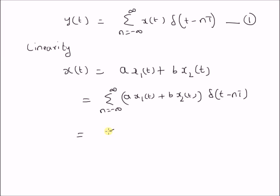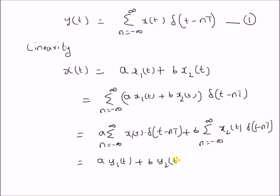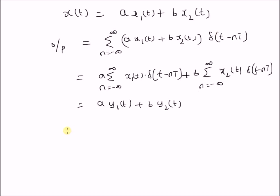this can be rewritten as the sum from n equals minus infinity to plus infinity of a·x1(t)·delta(t) plus b·x2(t)·delta(t). The summations give the corresponding outputs, so it is a times y1(t) plus b times y2(t), which we can deduce by looking at equation 1. Therefore, the system is a linear system.